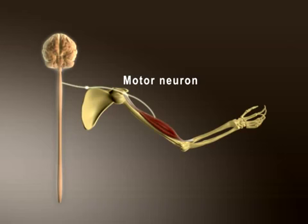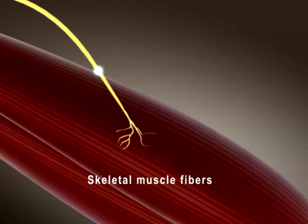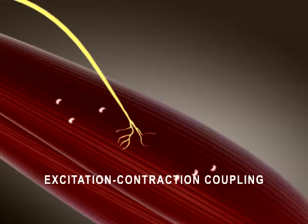Typically, a single motor neuron arising in the brain or spinal cord conducts action potentials that travel to hundreds of skeletal muscle fibers within a muscle. The sequence of events that converts action potentials in a muscle fiber to a contraction is known as excitation-contraction coupling.